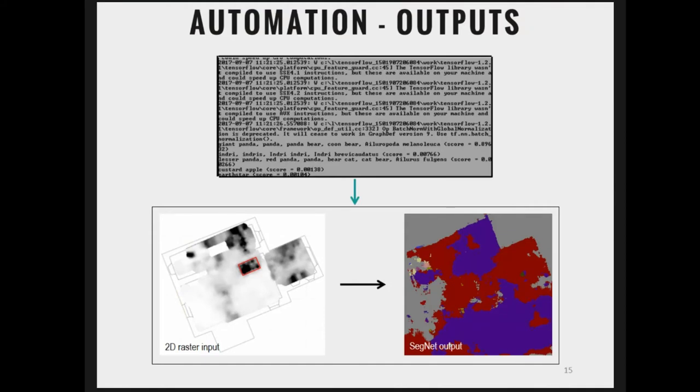Working in TensorFlow, this is the output you get with basic ResNet and TensorFlow Inception 3. What I'm trying to do is build on that using Keras and do some semantic segmentation — similar to what you would get in SegNet — which makes it a bit easier to build your classes. The problem is we don't have enough training data. So if anyone has radar data with graves in it, I would be happy to talk to you.